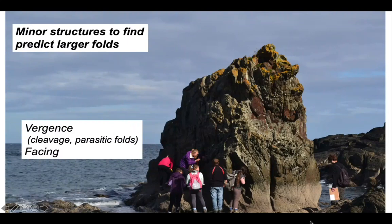Vergence and facing are two simple concepts that can frame observations which, if carefully recorded, can be used to predict structures as we work along a transect, helping to build up a larger scale cross section. These minor structures have major importance in betraying the position of outcrops on larger scale folds.